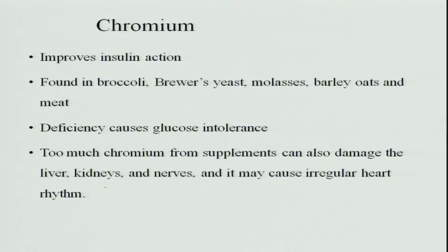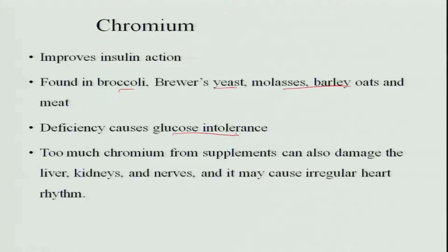The next mineral is chromium, which improves insulin action. It is found in broccoli, brewer's yeast, molasses, barley, oats, and meat. Since it is involved in insulin action, deficiency causes glucose intolerance. Too much chromium can damage the liver, kidneys, and nerves, and can also cause irregularity in heart rhythm.